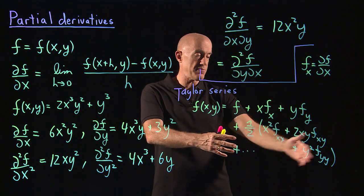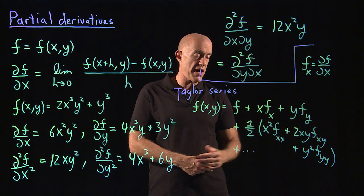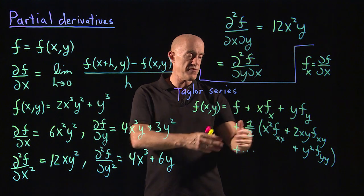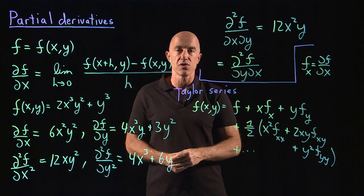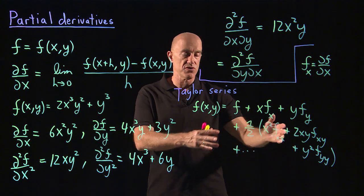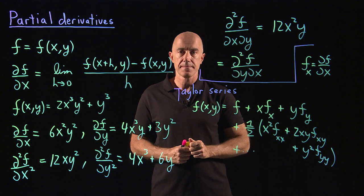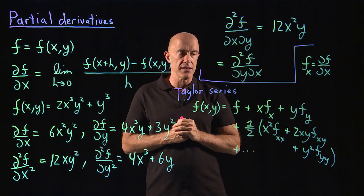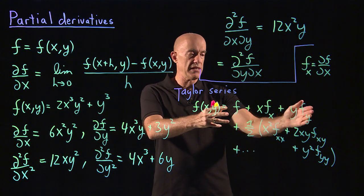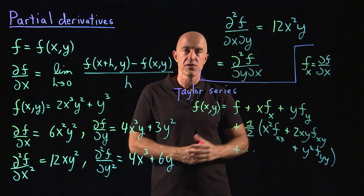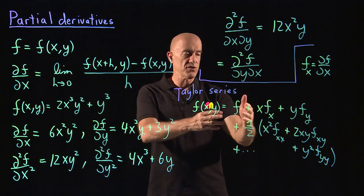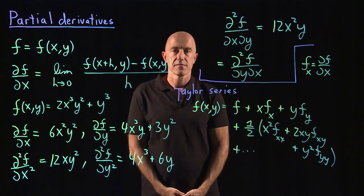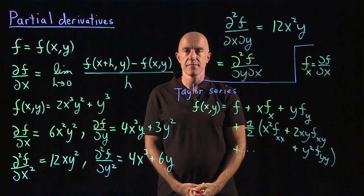If you keep going to higher order terms, you'll find binomial coefficients showing up. Typically in an application, you only need the linear term — you only need the first order terms. That's the Taylor series.